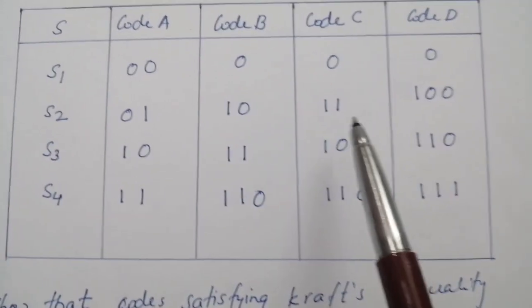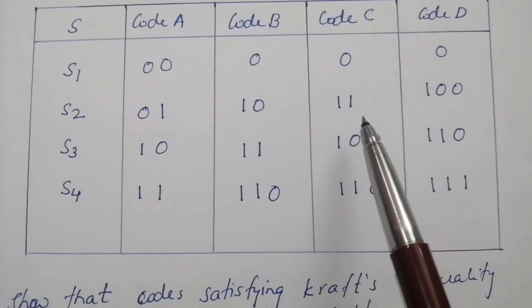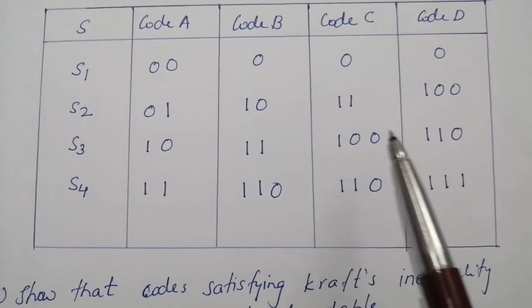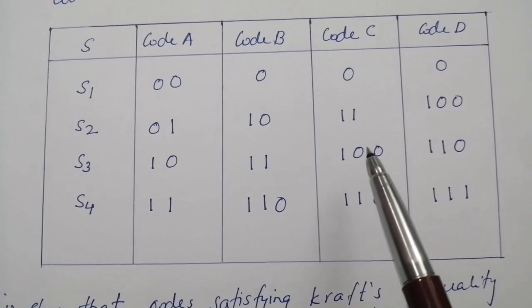But coding scheme C, even though it satisfies Kraft's inequality, it is not uniquely decodable, since it is also not a prefix-free code.